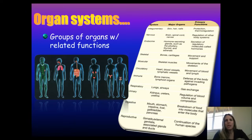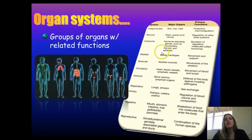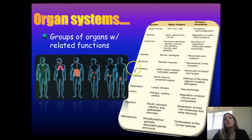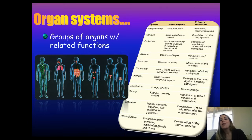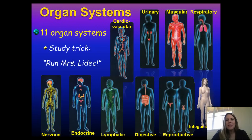In this particular course, we'll be going over the integumentary, skeletal, muscular, circulatory (also known as cardiovascular), respiratory, and digestive systems. We'll also be covering an orientation to the body today, along with some chemistry and basic cellular biology. All 11 organ systems are covered across the full A&P series.